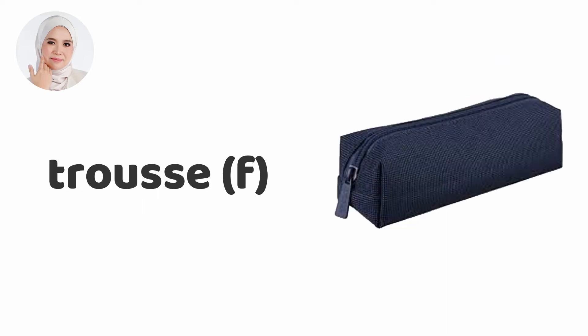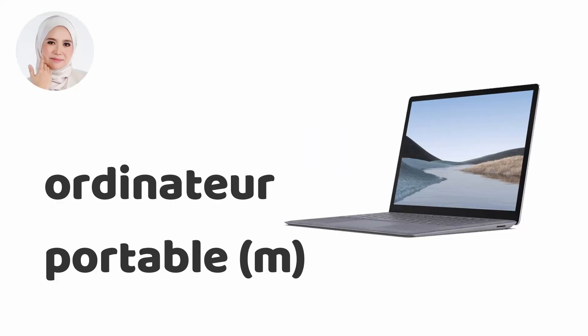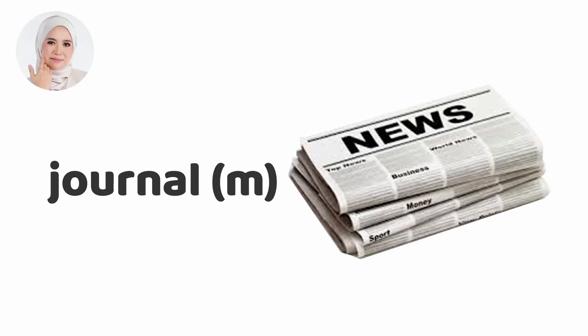Next you have trousse. Trousse is a pencil case and it is a feminine noun. Next you have clé. Clé is a feminine noun and it means a key. Ordinateur portable — that means laptop and it's masculine as well. Next you have journal. Journal means newspaper — not a journal — and it's a masculine noun.